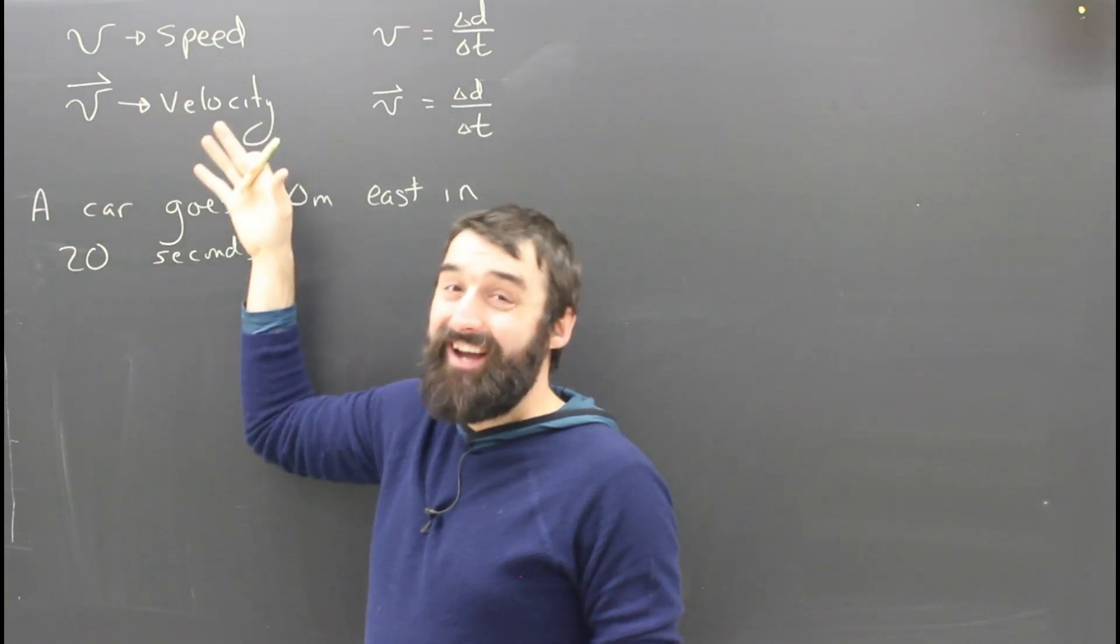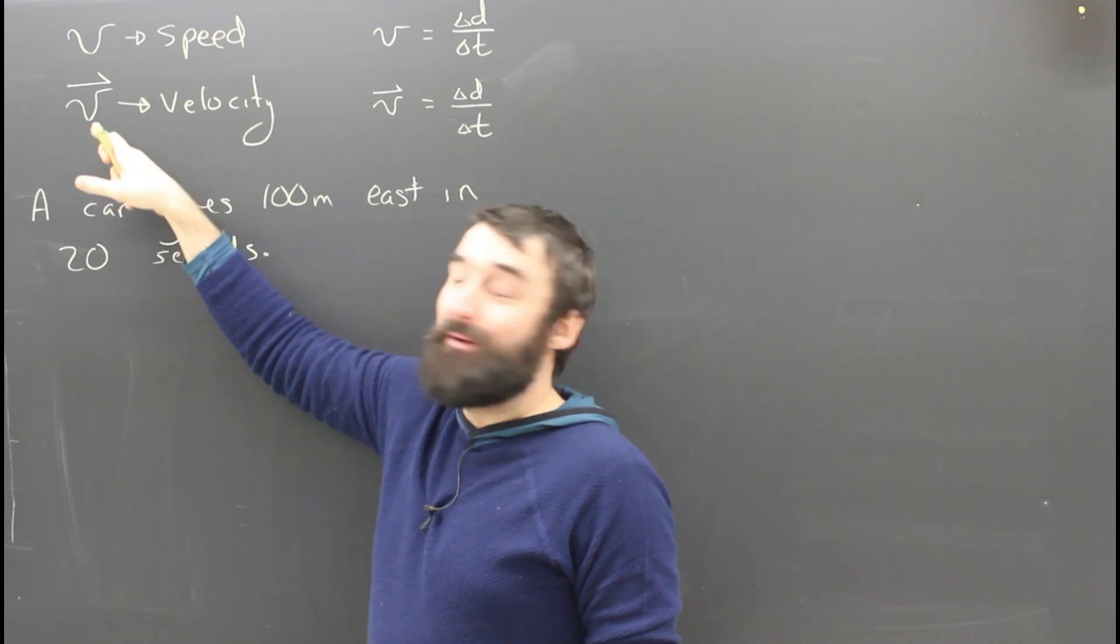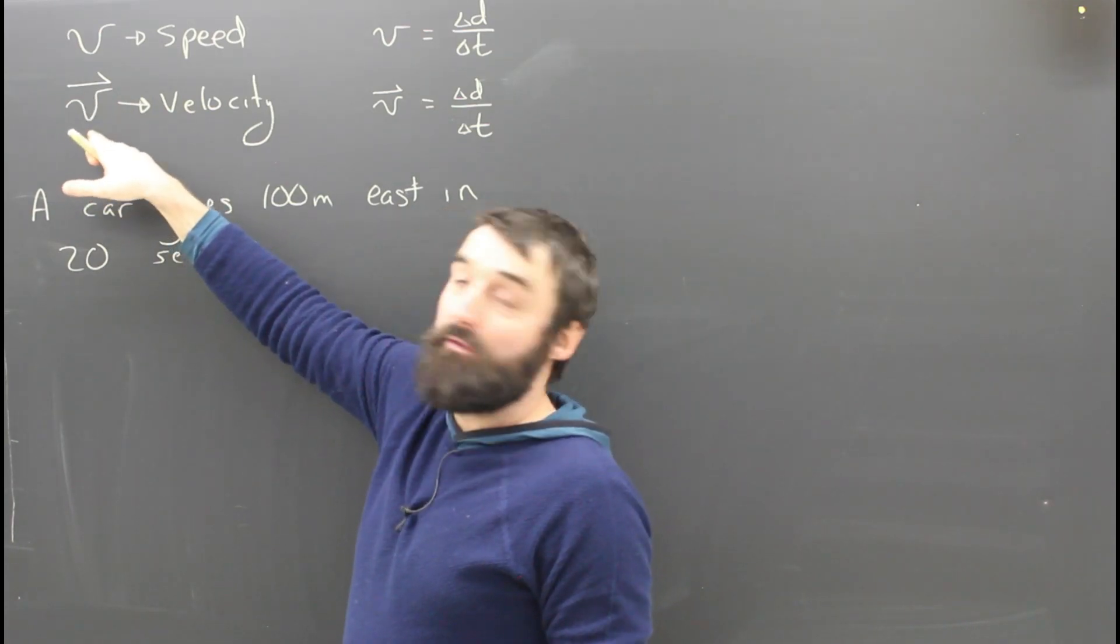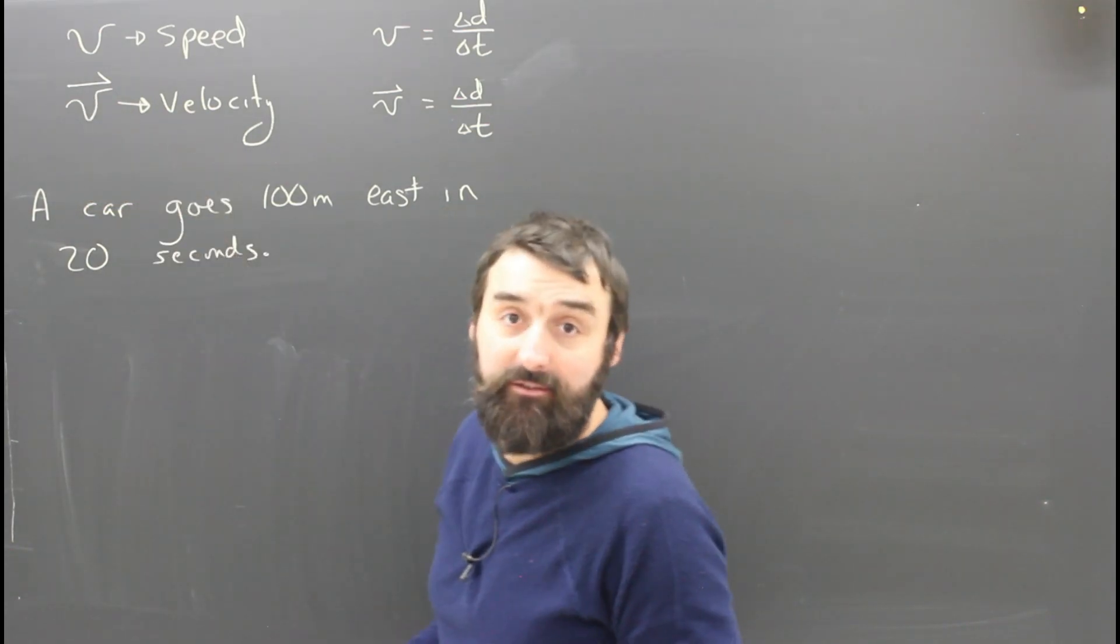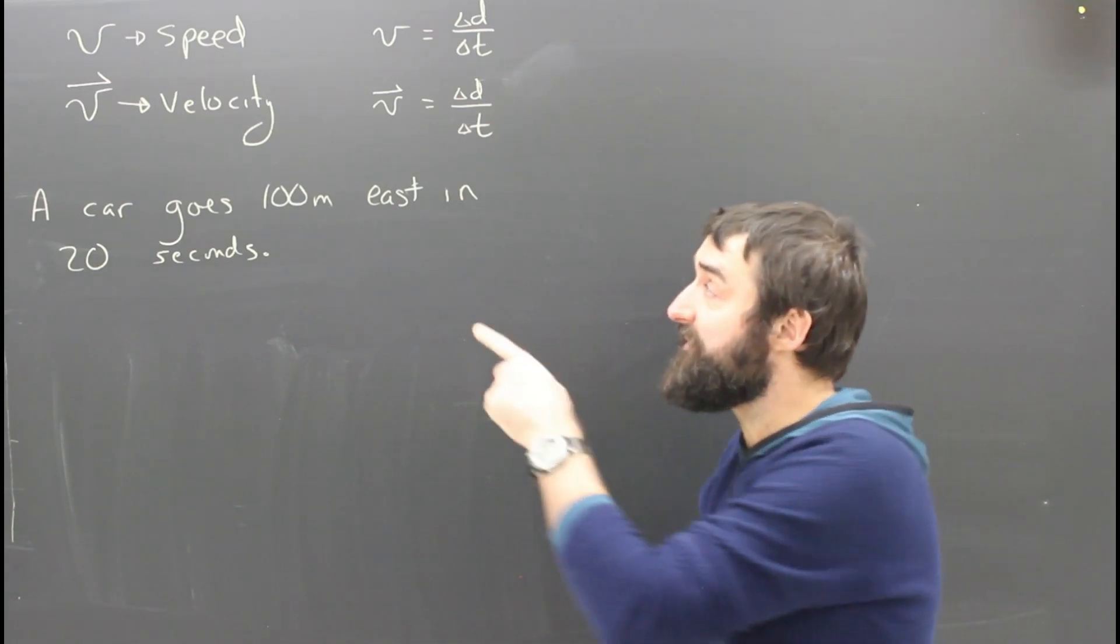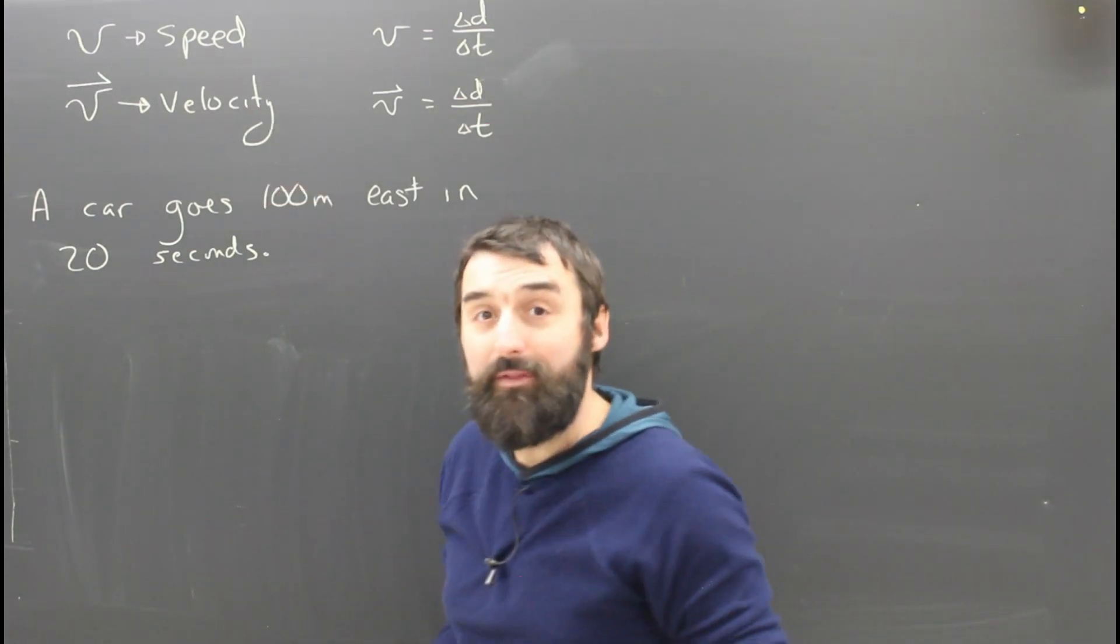Velocity and speed are kind of similar, so they're both V. But with the little arrow, the vector sign, we know that V with the arrow means velocity. So velocity is V with the arrow and speed is V without the arrow.